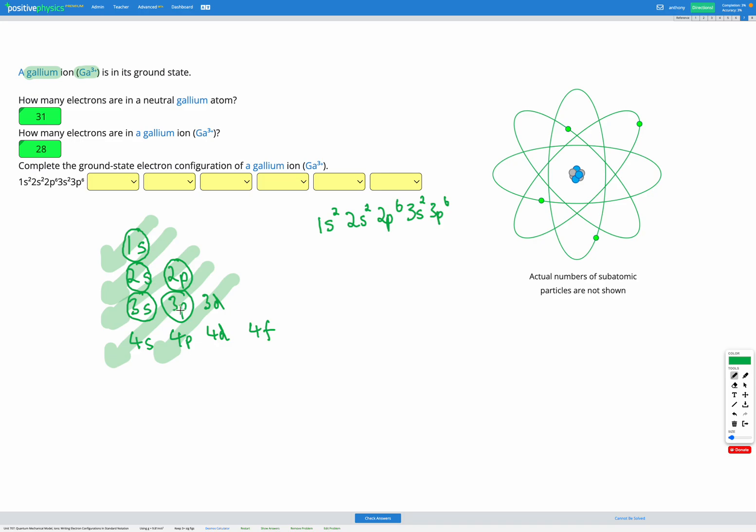Now looking at our diagram we might think 3d comes next, but remember we're following the arrows not the rows. So 4s is actually next. 4s can fit up to 2 electrons, so we've got a total of 20 electrons now. We still need to get to 31.